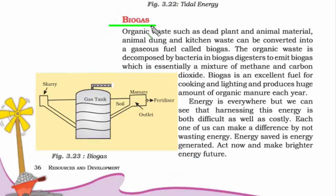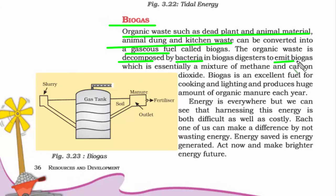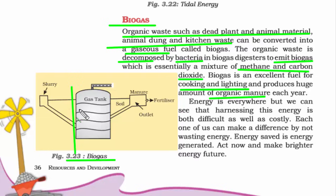Biogas is made out of organic waste such as dead plants and animal material, animal dung, and kitchen waste. With the help of bacteria we decompose the organic waste, and eventually biogas is emitted — a mixture of methane and carbon dioxide. It is good for cooking and lighting and also produces high amounts of organic manure for agricultural purposes. Organic waste is dumped in a tank, bacteria is added for decomposition, biogas is emitted and harnessed, and the byproduct is organic manure.